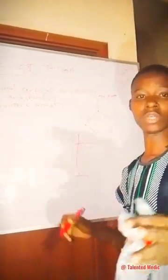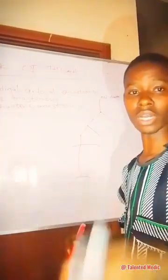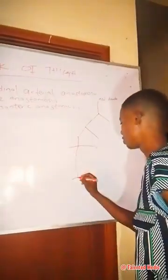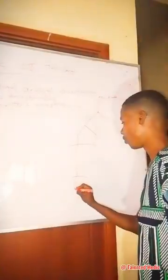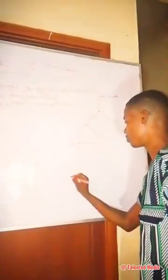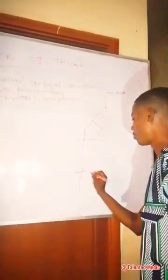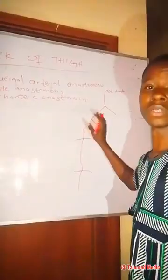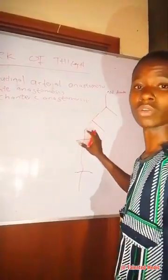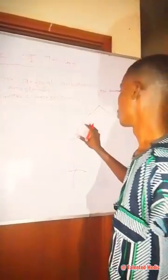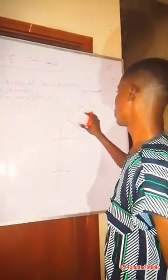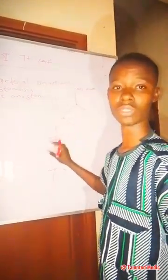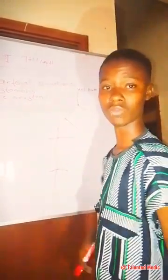The femoral artery later continues as the popliteal artery after passing through the adductor magnus and adductor hiatus. However, our main concern today is the arterial anastomosis on the back of the thigh, so we will be discussing mainly the femoral artery and not the popliteal artery.